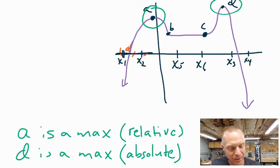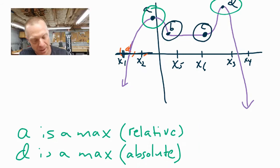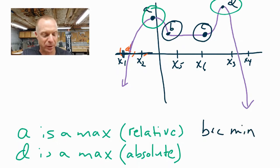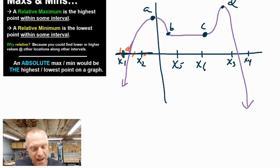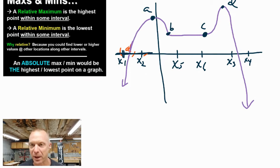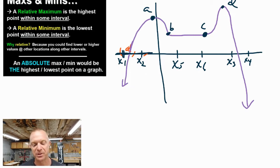Points B and C would be low points on the graph, so we could say that B and C are minimums. They're not absolutely the lowest point on the graph because the graph actually goes lower as it travels down to negative infinity, so B and C would also be relative minimums. A relative maximum is just the highest point in some interval; a relative minimum is the lowest point in some interval. If there's a point that's absolutely higher, then that gets the classification of being the absolute max or min — the highest or lowest point on the graph.